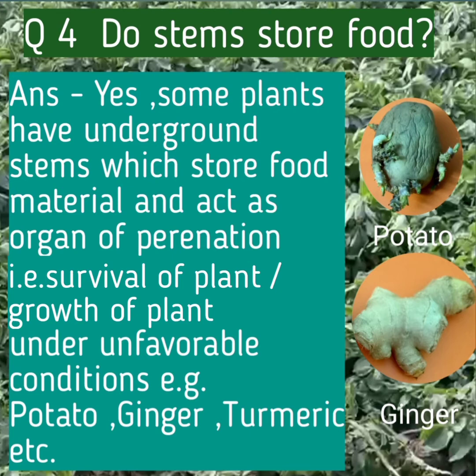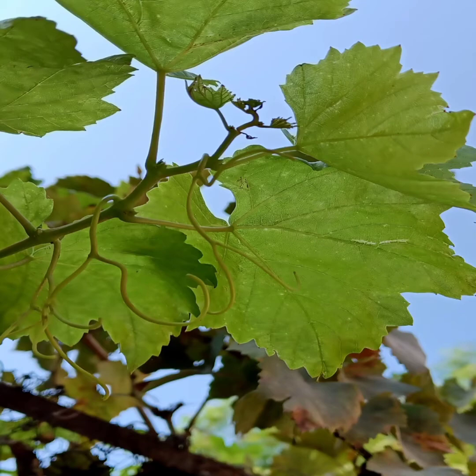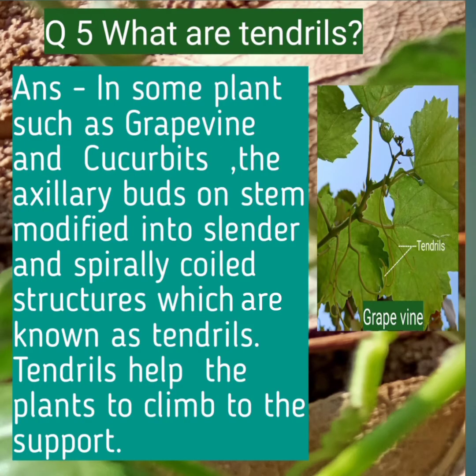Question number four: Do stems store food? Answer: Yes, some plants have underground stems which store food material and act as organs of perennation, that is, survival of the plant under unfavorable conditions. For example, potato, ginger, turmeric, etc.